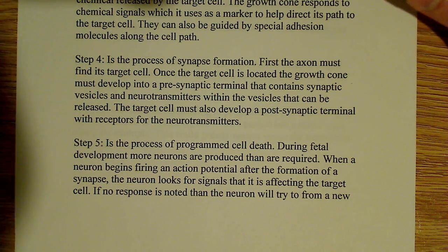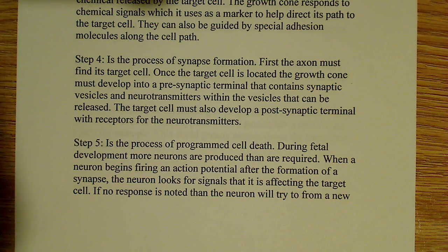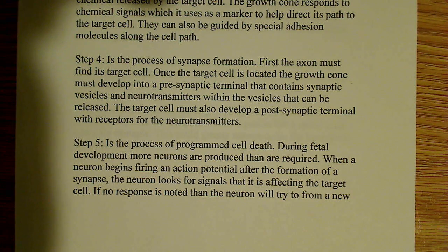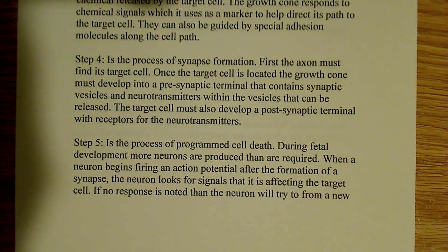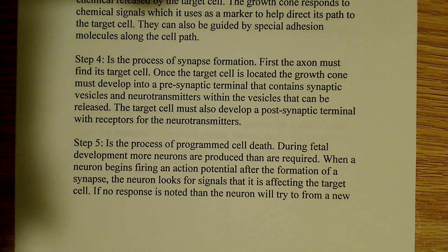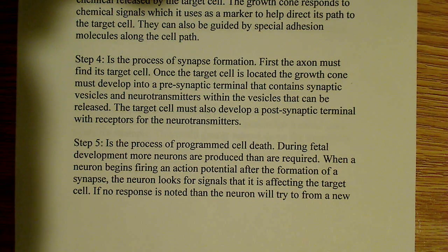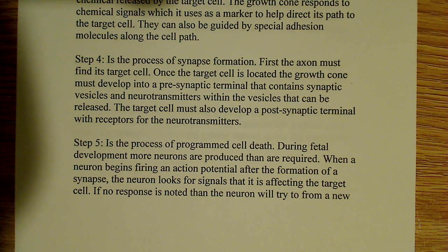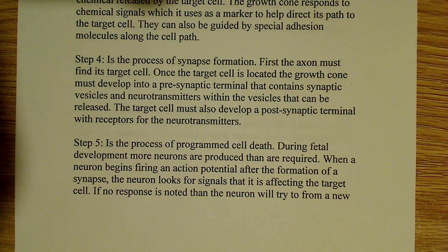Step five, the final step, is called programmed cell death — a really hot topic that a lot of people are researching. During fetal development, more neurons are produced than are needed. When a neuron begins firing action potentials, having already reached its target tissue, it puts feelers out to see if its connection is being responded to. It begins firing action potentials after forming a synapse, looking for signals that it's actually affecting the target tissue — because there's no sense in a neuron firing for no reason.